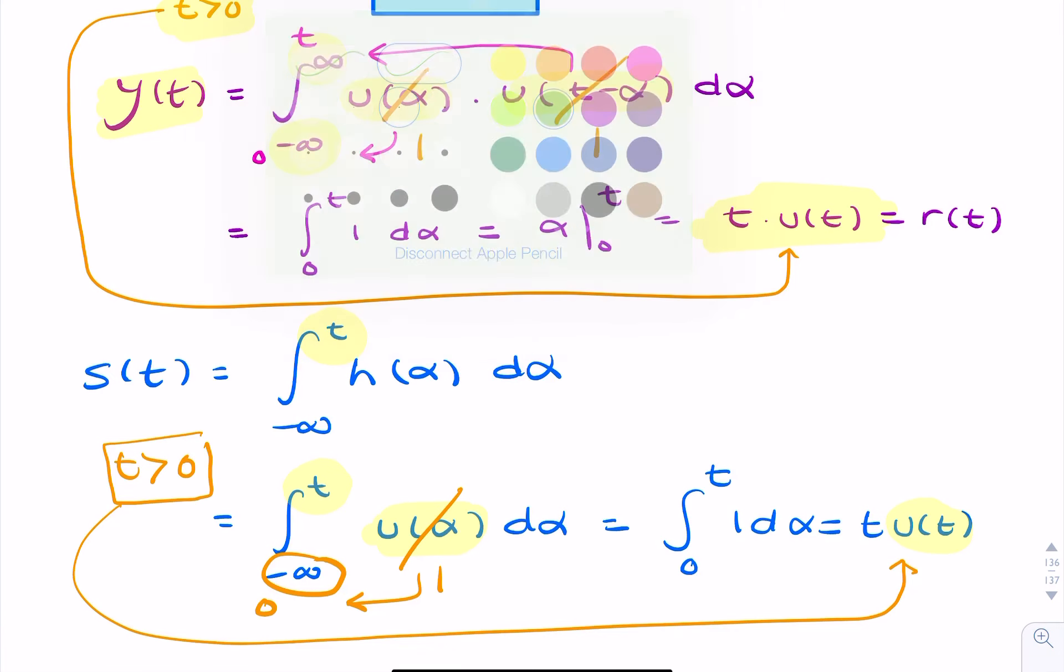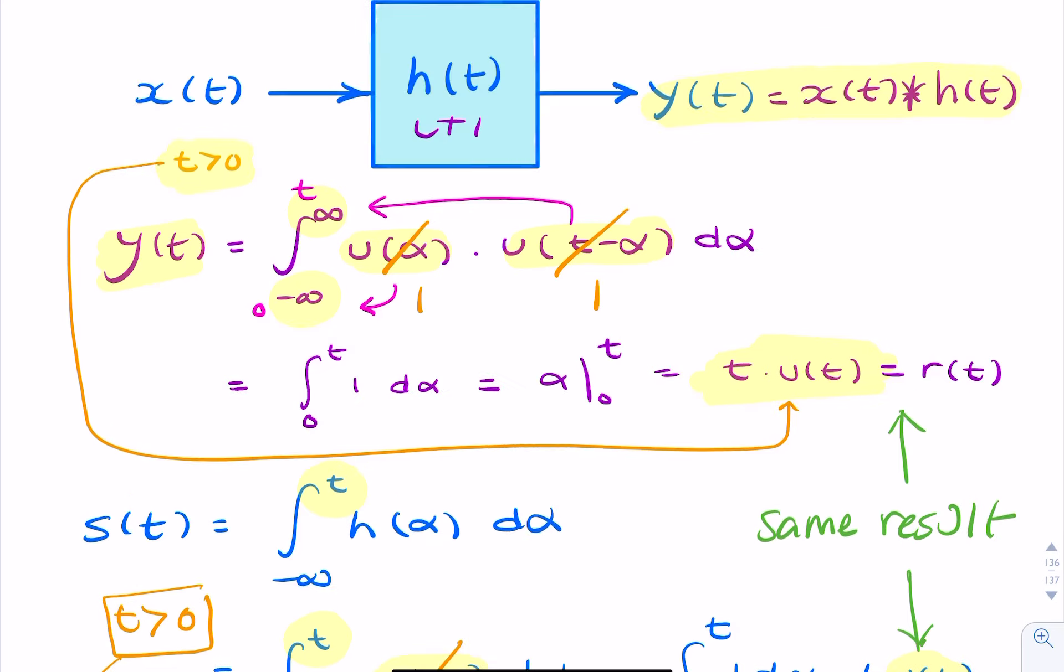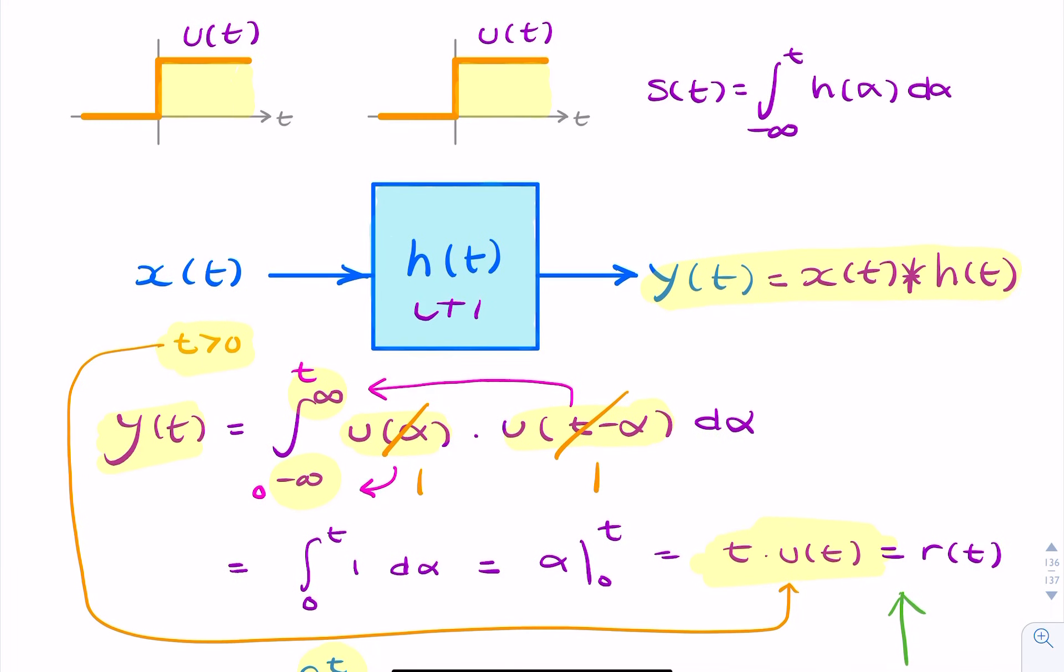So you can see that whichever way we do it, we get the same result. So we need to choose, when answering a question like this, which approach is less work. So I would suggest you just integrate the impulse response. But by all means, you can carry out the convolution integration.